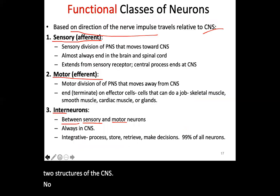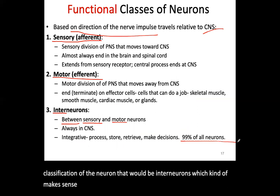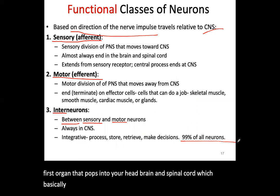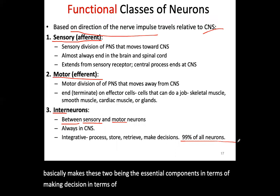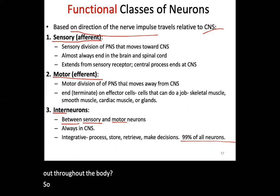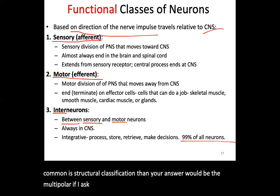Among the three functional types, interneurons are the most common — which makes sense since the brain and spinal cord are the primary organs of the nervous system. To summarize: if asked for the most common structural classification, the answer is multipolar. If asked for the most common functional classification, the answer is interneurons.